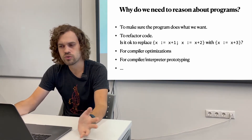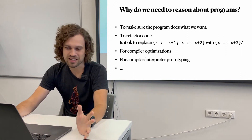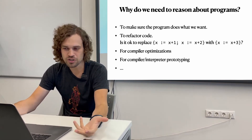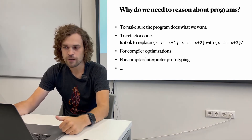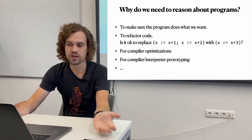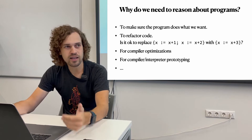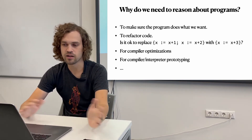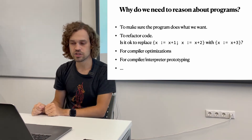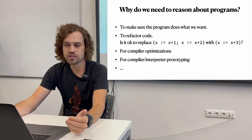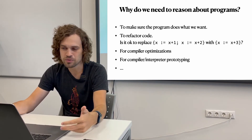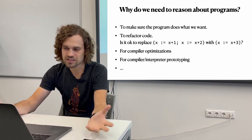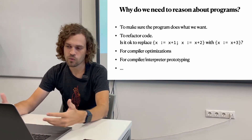Why and who needs to reason about programs? The very basic thing is that you want to make sure the program does what you want when you implement it. Even though you can have intuition, formal semantics can help make it precise, especially in places where you're unsure whether this example should evaluate to this or to that. You can look at cases where the C standard is not fully specified, and Clang will do one thing and GCC will do another — you generally don't want that.